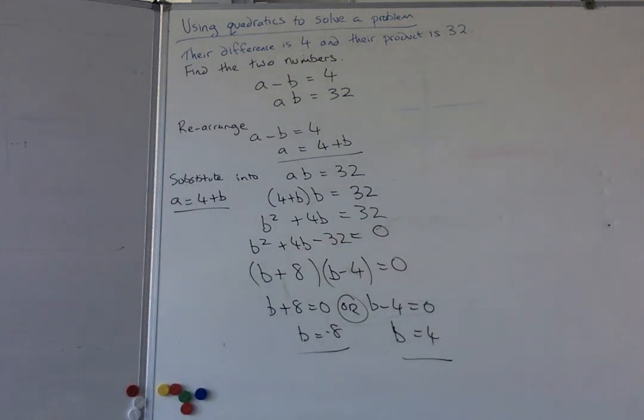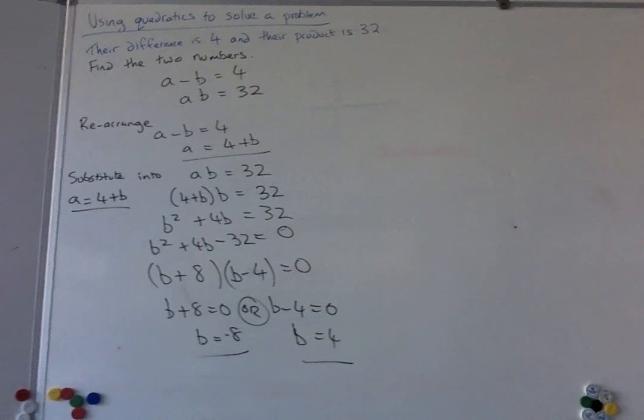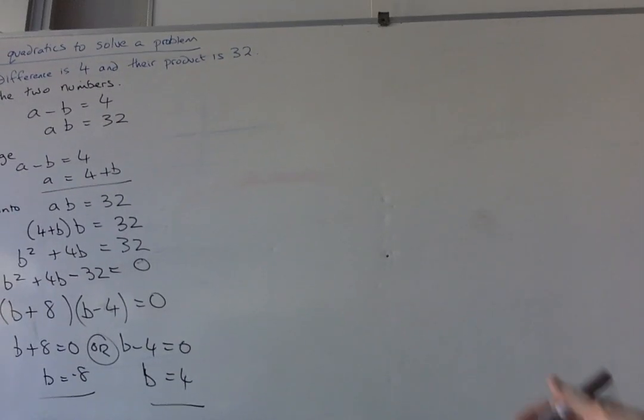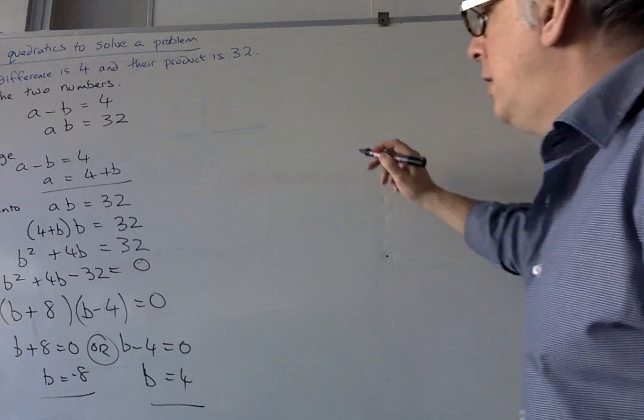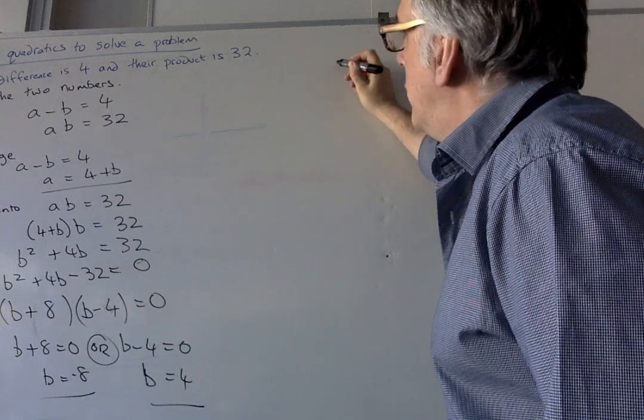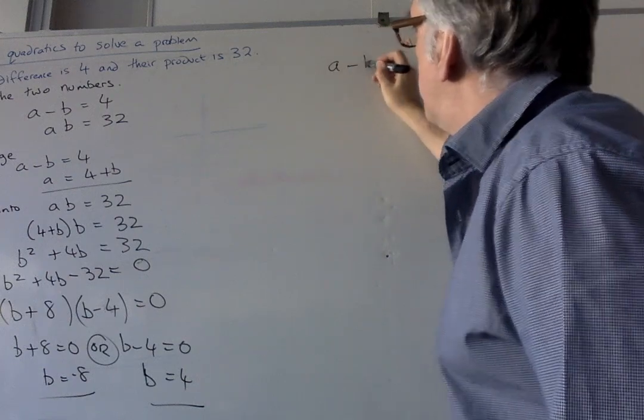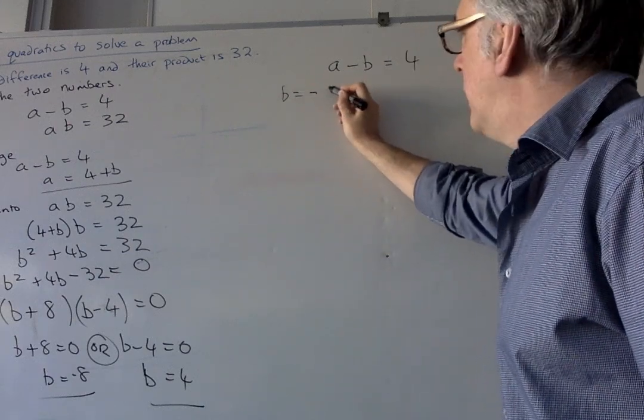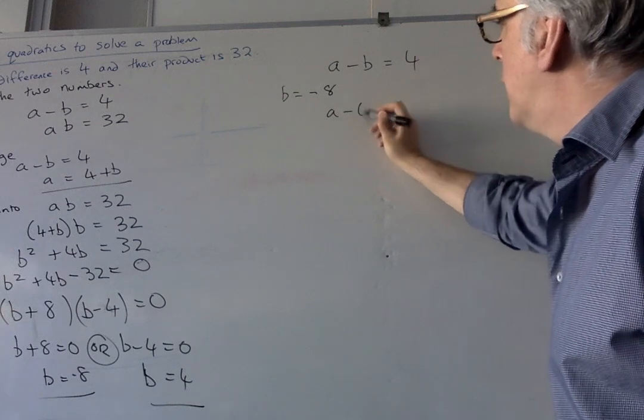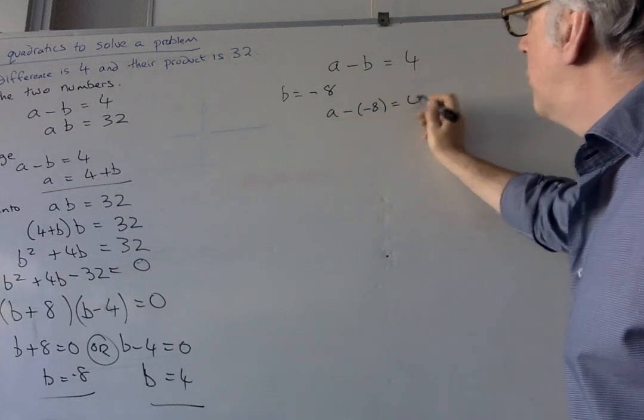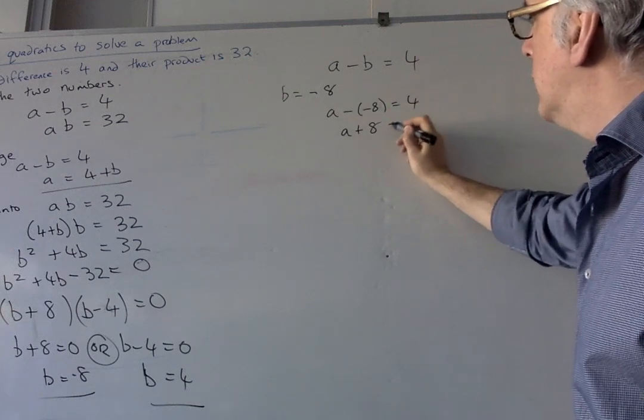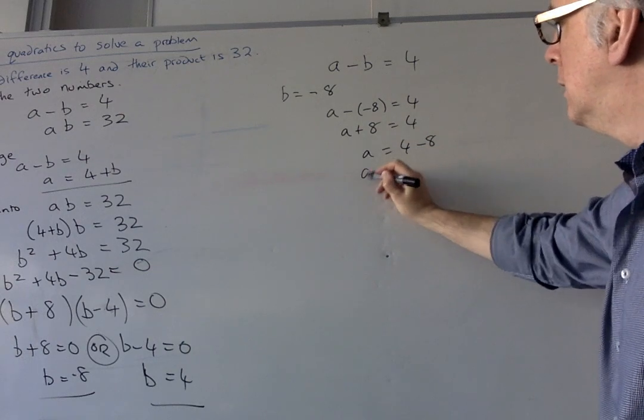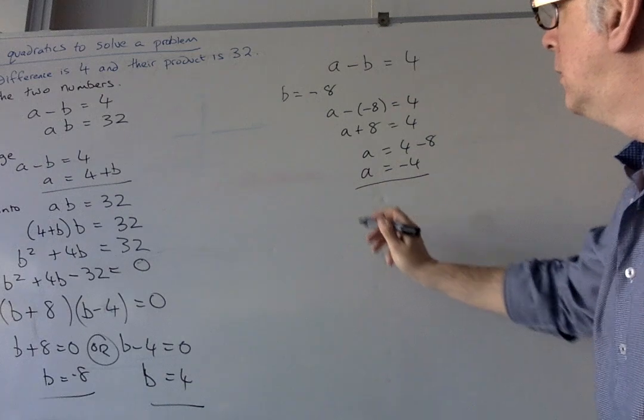And we need to find their A partners. So let's go across to the other side, let's give ourselves a little bit more space. So now we can go back and we know that A minus B equals 4, and when B over here is minus 8, so it's A minus minus 8 equals 4. So A plus 8 equals 4. So A equals 4 minus 8, so A equals minus 4.